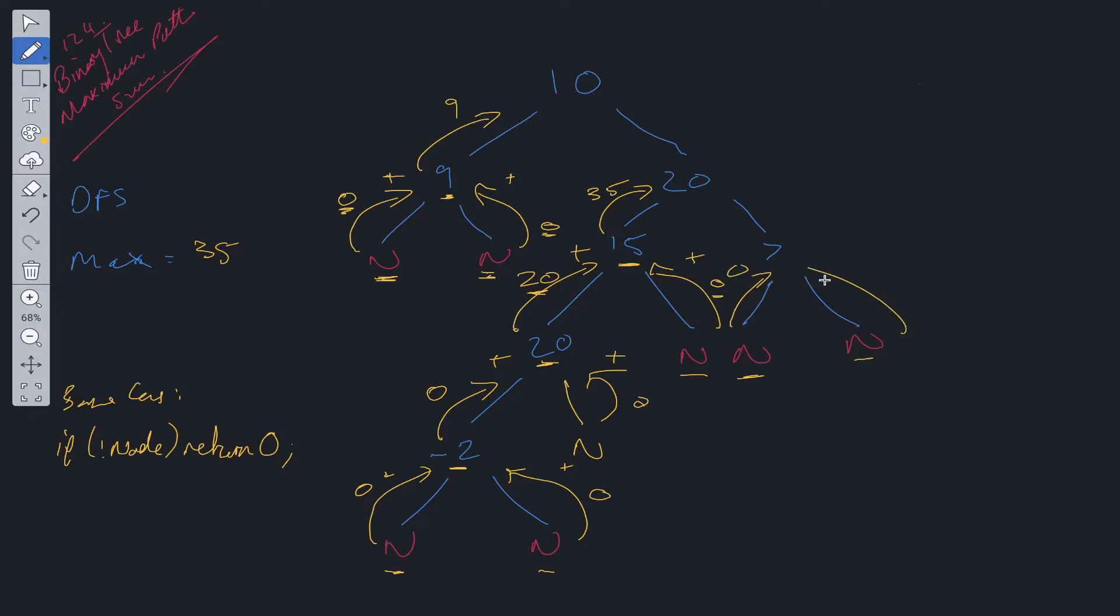Then we traverse the right tree. We reach null here, return up 0, return up 0. Current max is 0 plus 7 plus 0. So that's not greater than 35. So we return up 7 plus the maximum. So that's going to be 7.